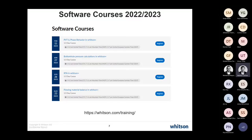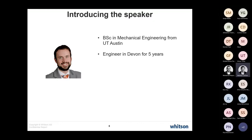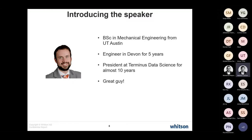This week we're lucky to have a good friend of mine, Derek Turk. His background is a bachelor's degree in mechanical engineering from UT Austin. After that, he worked for Devon Energy in Oklahoma City for close to five years — that's through that network that I got to know Derek. After that, he has been the president of a company called Terminus Data Science for almost ten years. Most importantly, he's a super nice guy, very approachable at technical conferences and does not shy away from a good technical discussion.